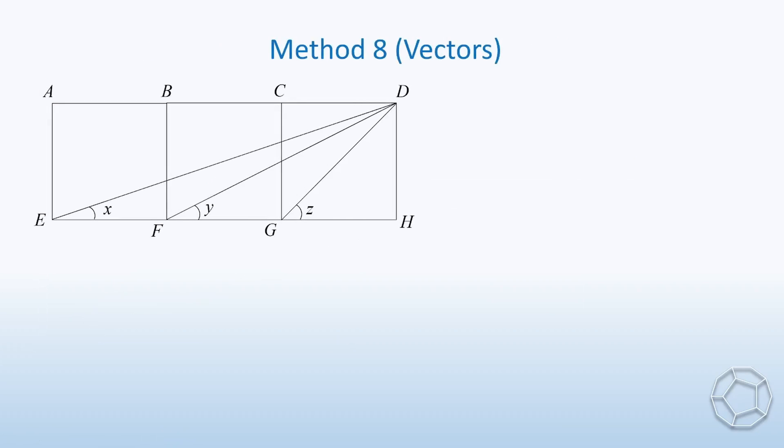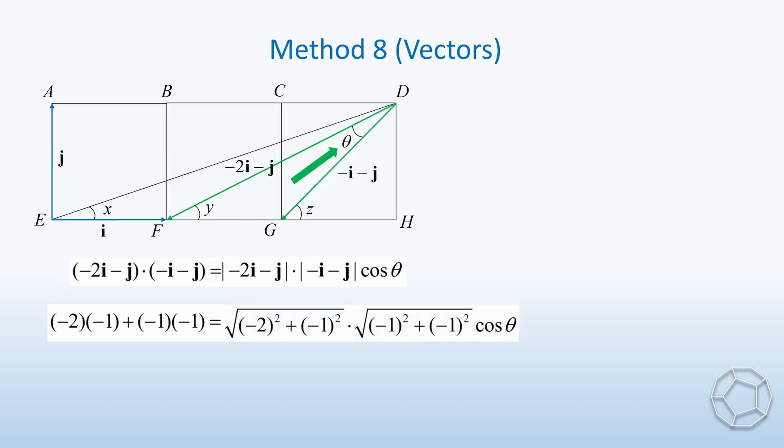For method 8, here we come to vector. Let vector EF be i, and vector EA be j. Now, we're going to express the two green vectors in terms of i and j. They are vector DF is equal to negative 2i minus j, and vector DG is equal to negative i minus j. Then, we can talk about the angle between them, which is this angle theta. What can we do with these two vectors? Let's take a scalar product. It is also known as the dot product. On the left-hand side, we have negative 2 times negative 1 plus negative 1 times negative 1, while the right-hand side are the magnitudes of the two vectors and cosine theta.